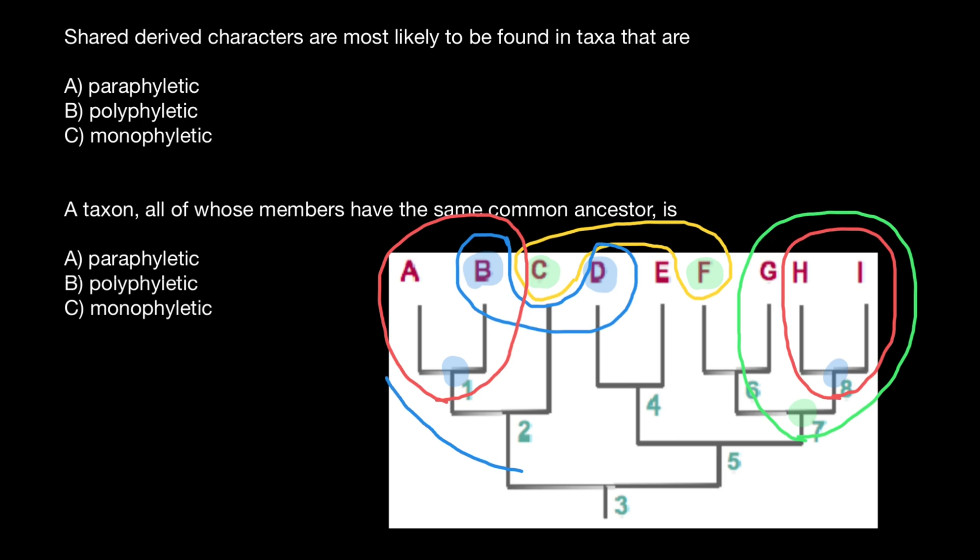And how we are going to call this group? Again, this is going to be example of the monophyletic group, because ancestor number two here, and we circled all his descendants.